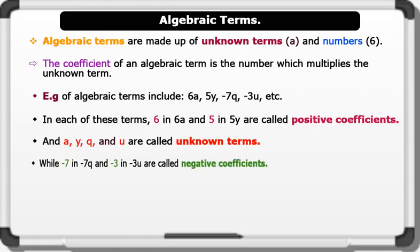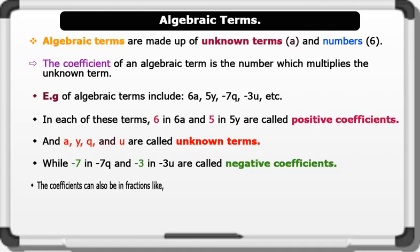While minus 7 in minus 7Q and minus 3 in minus 3U are called negative coefficients. The coefficients can also be in fractions like 3 over 9X and minus 1 over 4W. That's brilliant.